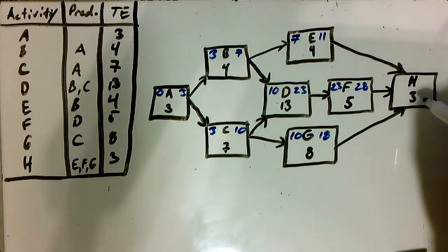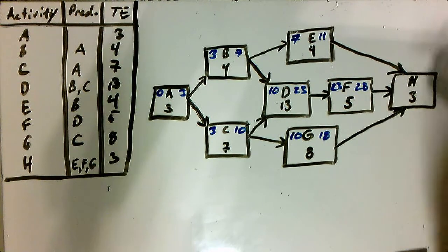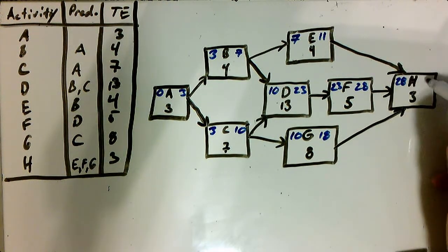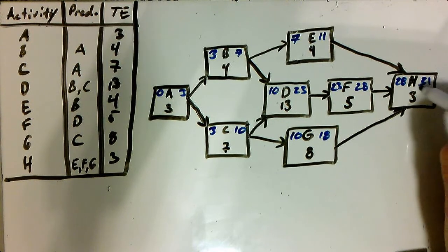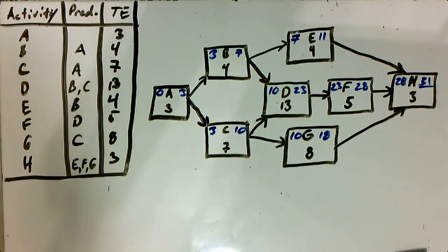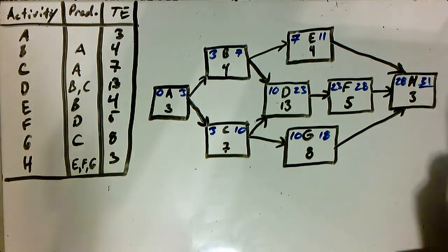Now we have a merge to H, and we have to again choose the biggest number between eleven, twenty-eight, eighteen. Twenty-eight is the biggest. That's the one we choose. Plus three, thirty-one. Thirty-one is our first overall estimate of how long it takes to do this entire project.